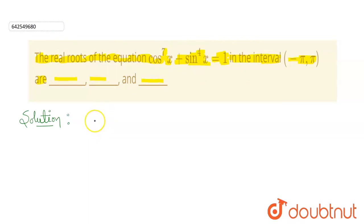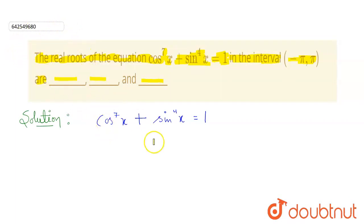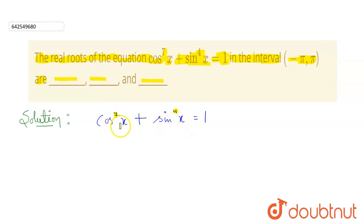First, let's write the equation given to us. For solving this equation, we will first change the equation in terms of cos or sin. Here we have cos raised to the power 7 and sin raised to the power 4. If we shift sin towards RHS, then it will be 1 minus sin raised to the power 4x. We can break that using the A squared minus B squared formula. But we cannot break cos raised to the power 7x accordingly, so let's change the whole equation in terms of sin.